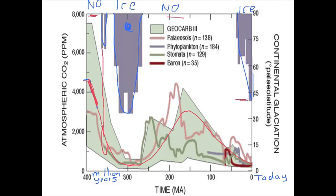What we see is a very nice relationship: high CO2, little or no ice; low CO2, lots of ice. Furthermore, we understand from processes that you can read about in our course and elsewhere, that it is the CO2 causing the changes in ice, and not primarily the ice causing the changes in the CO2.